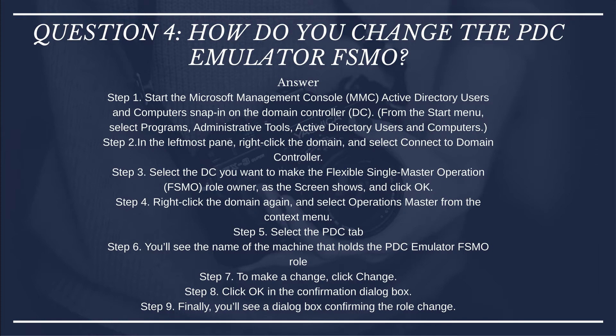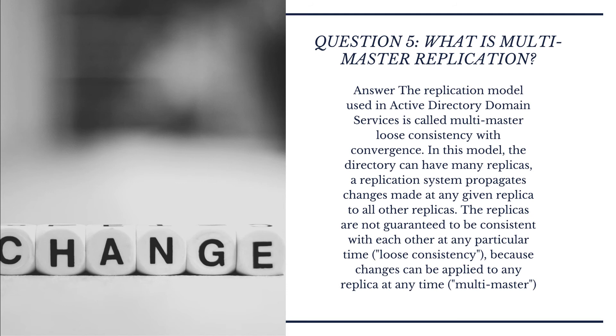Step 3 — Select the DC you want to make the FSMO role owner, as the screen shows, and click OK. Step 4 — Right-click the domain again and select Operations Master from the context menu. Step 5 — Select the PDC tab. Step 6 — You'll see the name of the machine that holds the PDC Emulator FSMO role. Step 7 — To make a change, click Change. Step 8 — Click OK in the confirmation dialog box. Step 9 — Finally, you'll see a dialog box confirming the role change.